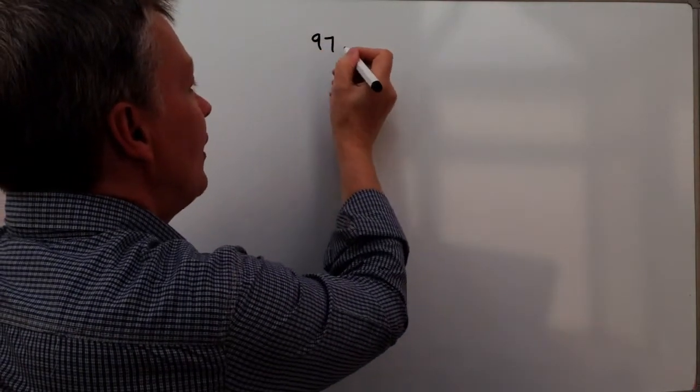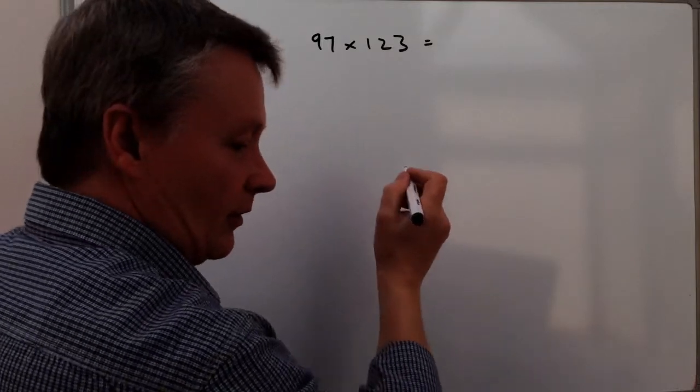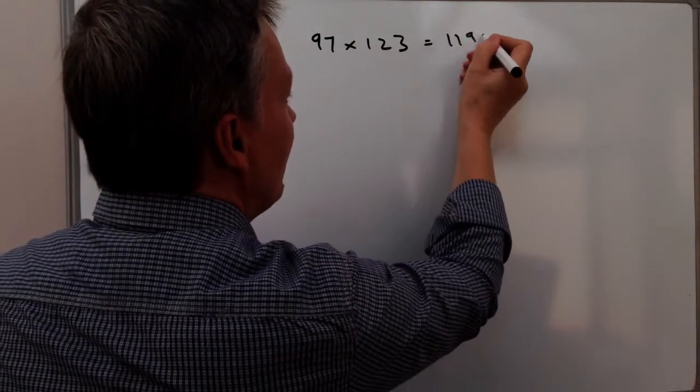Hi, so this is the second on the playlist where we're dealing with manipulating decimals. What we've usually got in these types of questions is we're given a piece of information. The piece of information would be something like 97 times 123 equals 11931.